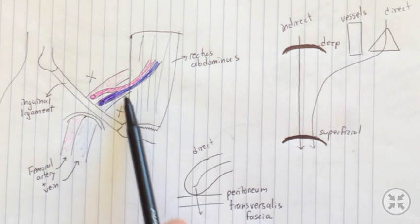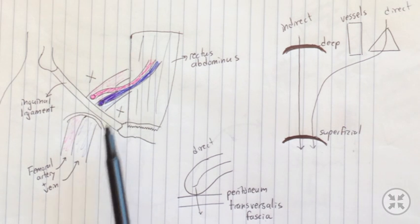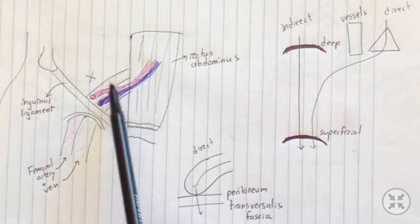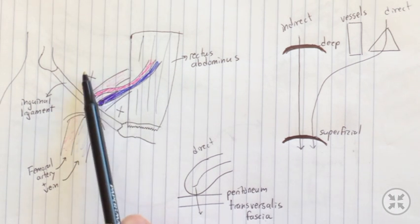This is where the direct hernia will occur. It's medial to these vessels. An indirect hernia will actually occur lateral to these vessels, more upstream here.